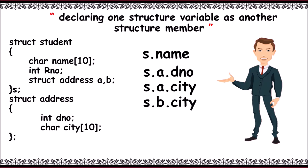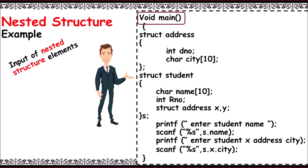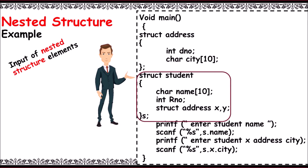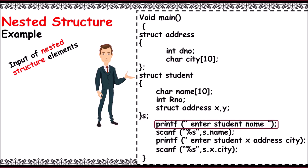Now for a sample program: in main, declare structure 'address' with two members 'dno' and 'city'. Declare structure variables 'x' and 'y' inside struct student, and a student variable 's'. Then print 'enter student name' and use scanf to read it with the structure variable dot member, that is 's.name'.